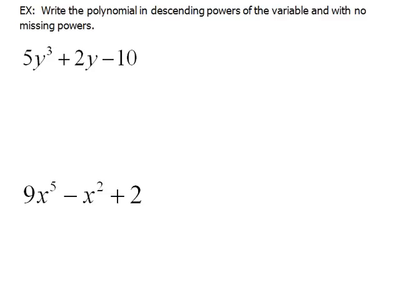So here we have an example that says, write the polynomial in descending powers of the variable and with no missing powers. Our highest power of the variable here is a cube, a 3. So we're going to start out writing 5y³, since that's the highest power.